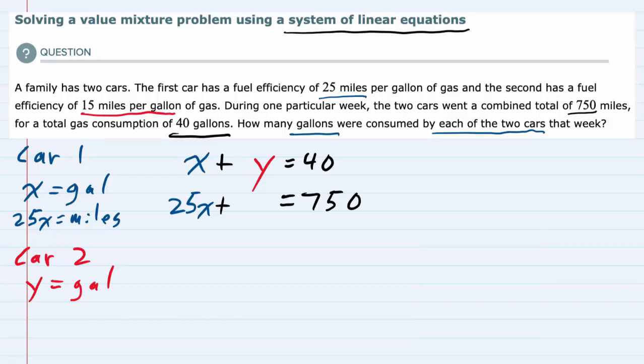The total miles that the second car goes is 15y—multiplying 15 and y equals the number of miles for that second car.